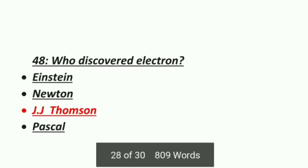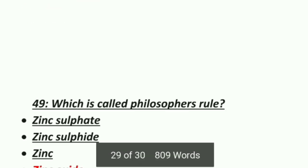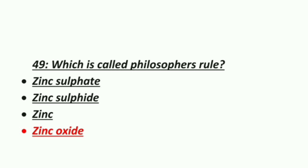Forty-eighth MCQ: who discovered the electron? Options include Einstein, Newton, J.J. Thomson. Forty-ninth MCQ involves zinc oxide — the correct answer is zinc oxide.